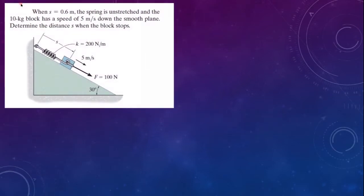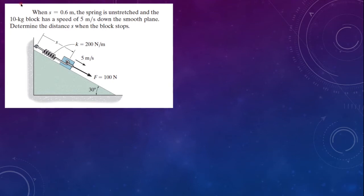So, the problem states when s equals 0.6 meters, the spring is unstretched, and the 10 kilogram block has a speed of 5 meters per second down the smooth plane. We can understand that since it's a smooth plane, there will be no friction. Determine the distance s when the block stops.